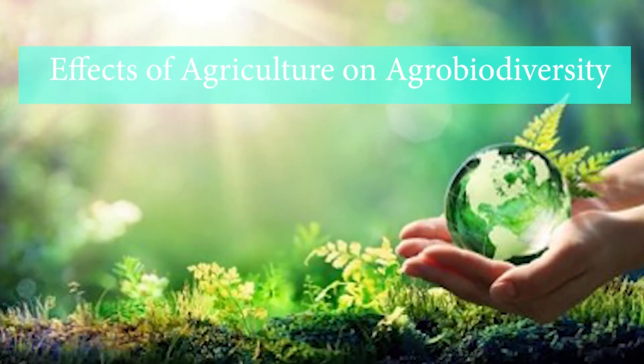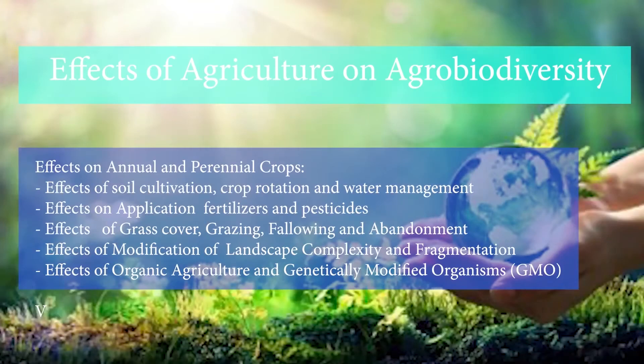We have already learned about agrobiodiversity, its values, and the threats to it. Now we need to learn, from the lens of sustainability, about the effects of agriculture on agrobiodiversity. We will look at how annual and perennial crops are affected by our agricultural practices on agrobiodiversity components like soil — covering crop rotation, water management, application of fertilizers and pesticides, grass cover, grazing, and abandonment of agricultural land.